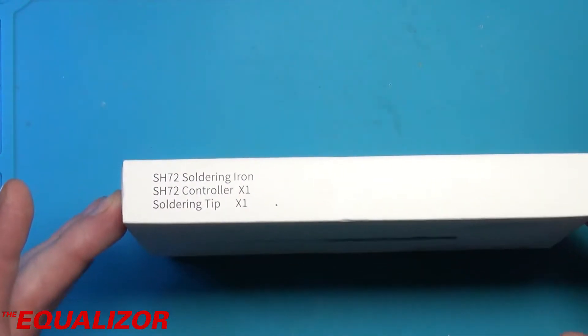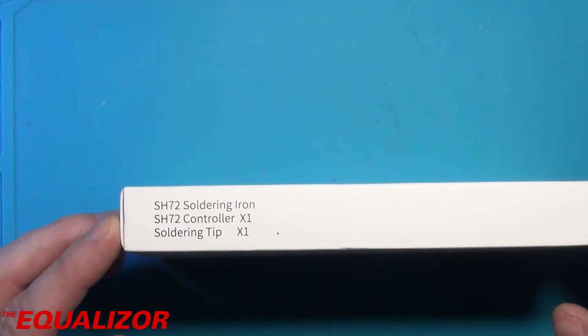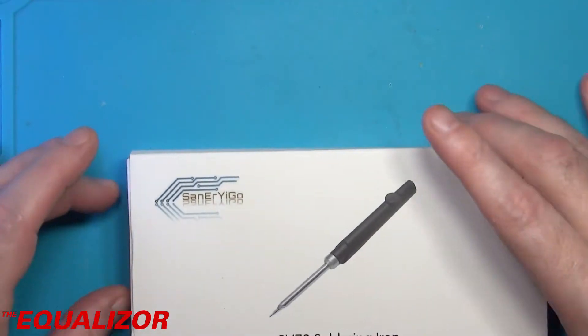Now inside the box we have apparently a soldering iron, a controller, and the soldering tip. Let's go ahead and have a look at those.